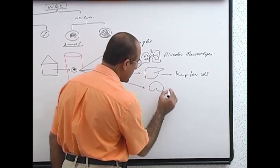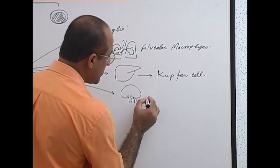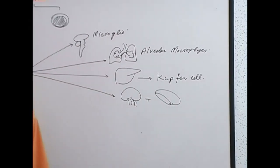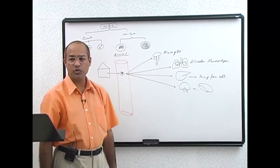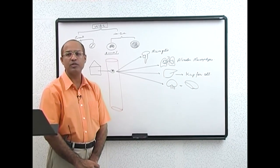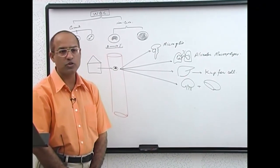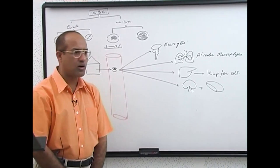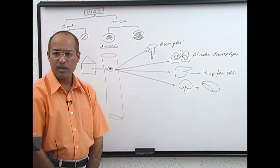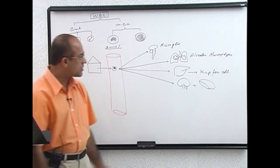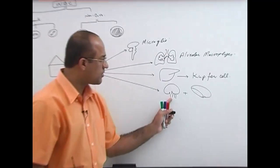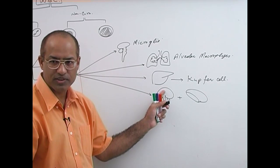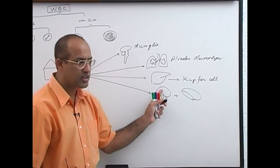Macrophages that go into lymph nodes or the spleen are called histiocytes. Histio means tissue, cyte means cell — so macrophages present in almost all tissues are called histiocytes. Some macrophages are present specifically in the lymph node sinuses, and they are called sinus macrophages.